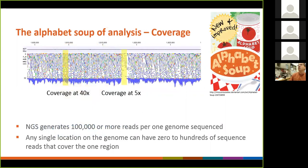Another thing we look at is coverage. If we sequence a gene, we look at how many data points support that a specific location is an A. If we have 40 independent data points from our whole genome sequencing run, that's called 40X coverage — pretty common sense that we're quite sure it's correct. If we have a low coverage, we might drop that SNP; it's not a high-quality SNP. We typically set a coverage cutoff, which could be 20X, 25X, or 30X. If anything is below that, we're not going to use it for the analyses.